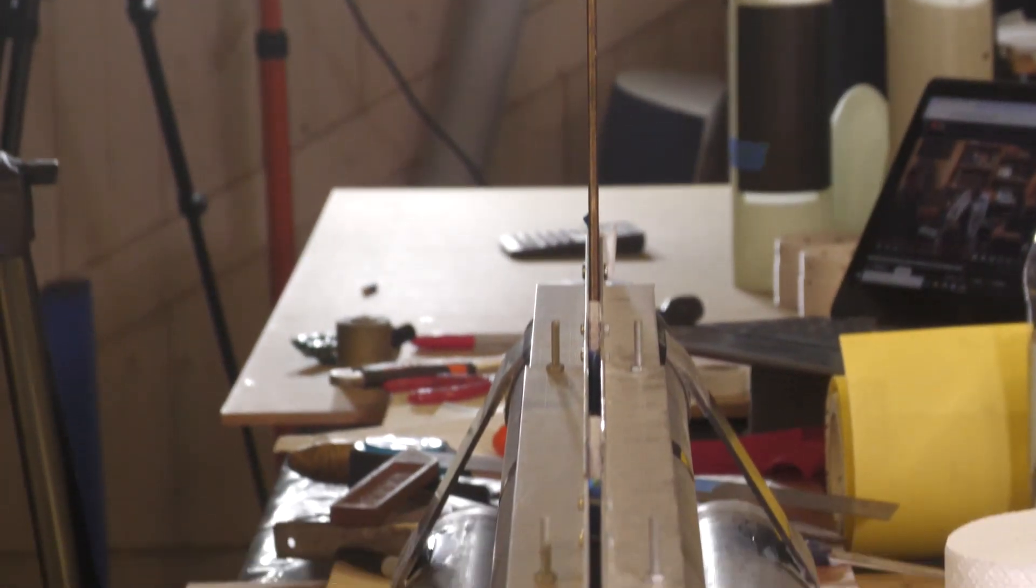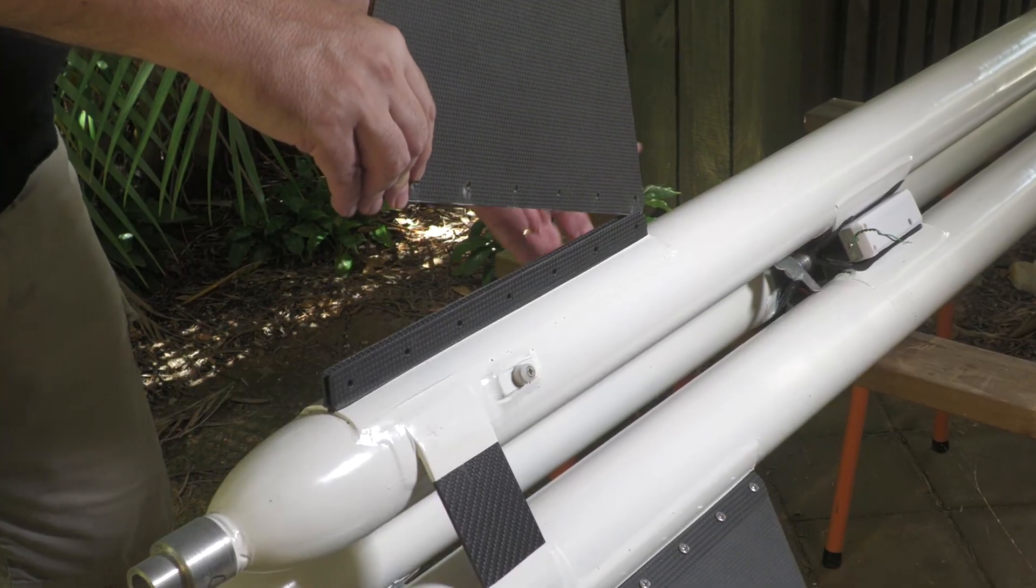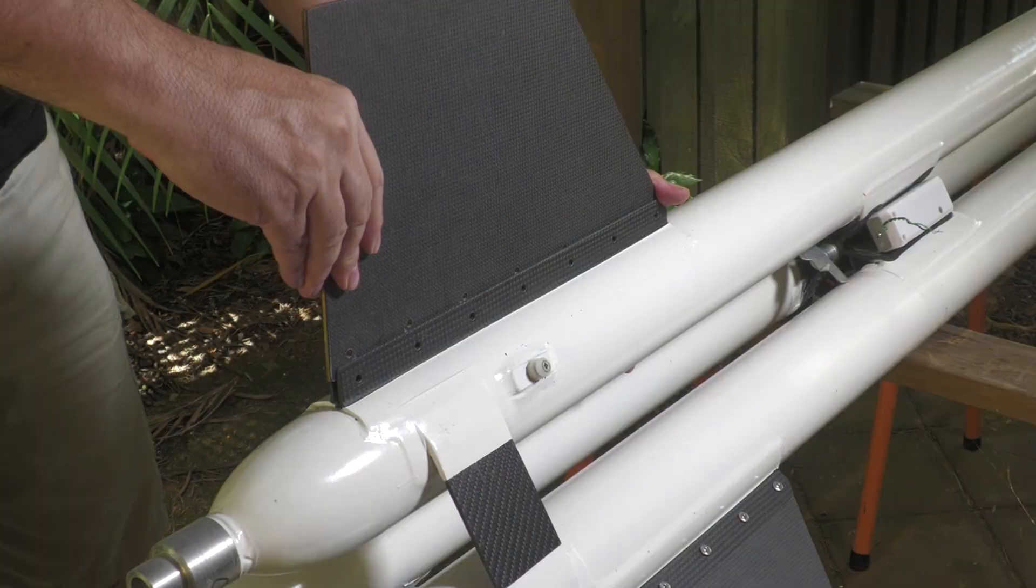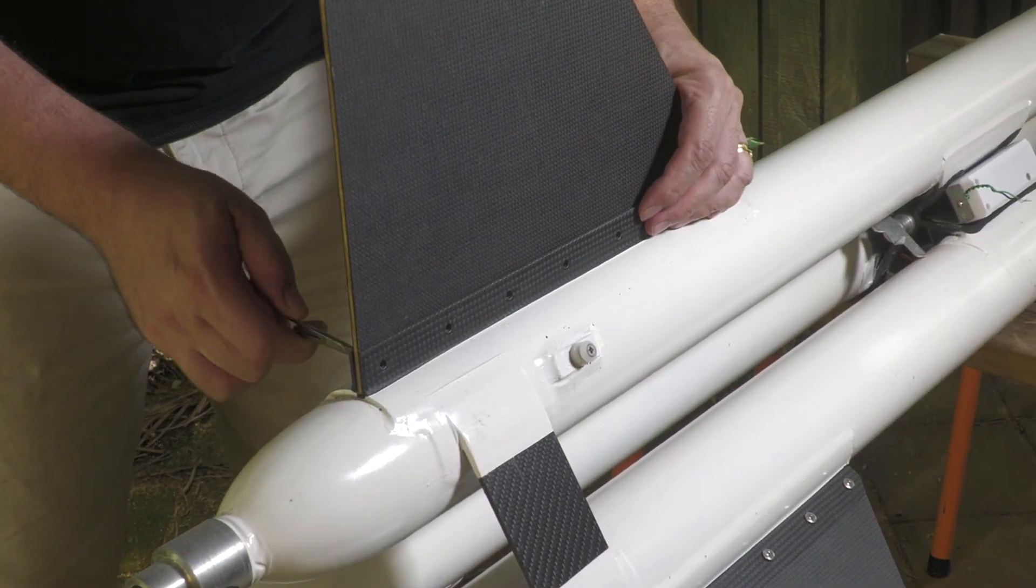Here we're checking for fin alignment down the booster using a calibrated eyeball. When inserting the fin into the brackets, we just roughly align it with the holes and then use something like a screwdriver to get that final exact hole alignment.